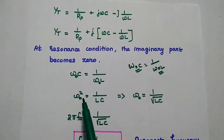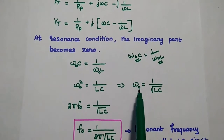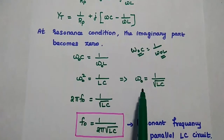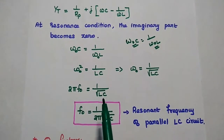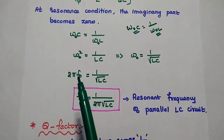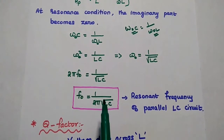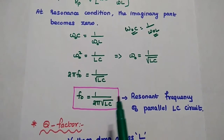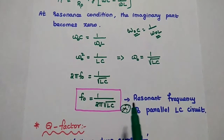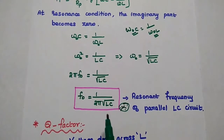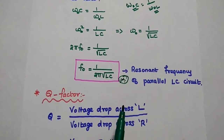From omega-naught squared equals 1 by LC, we take the square root on both sides. Since omega-naught equals 2·pi·f-naught, we get: 2·pi·f-naught equals 1 by square root of LC. Moving 2·pi to the other side gives: f-naught equals 1 by (2·pi·square root of LC). This is the standard formula for the resonant frequency of a parallel LC circuit.